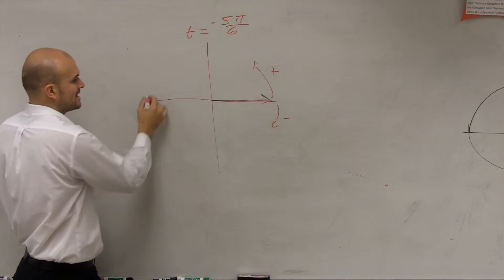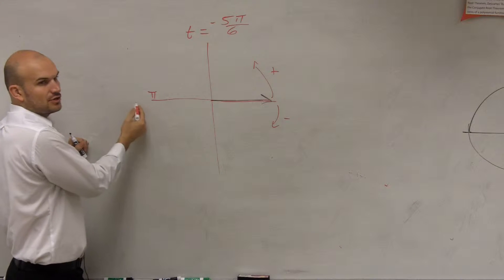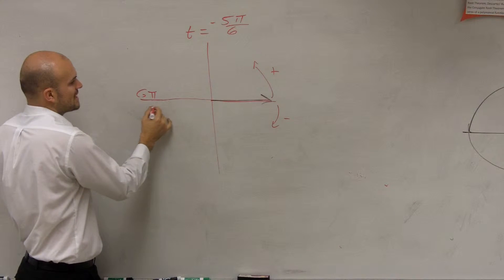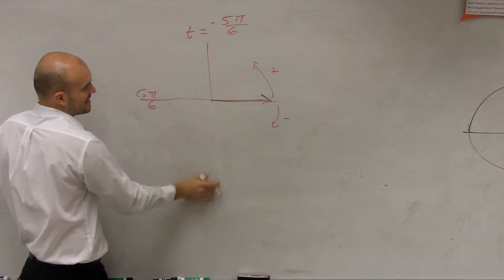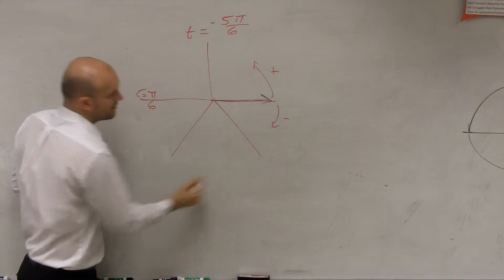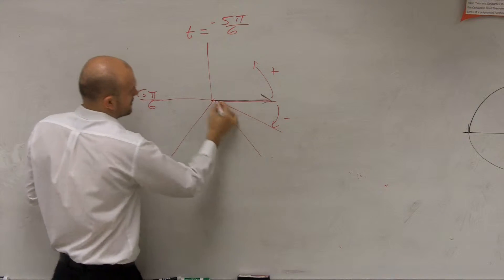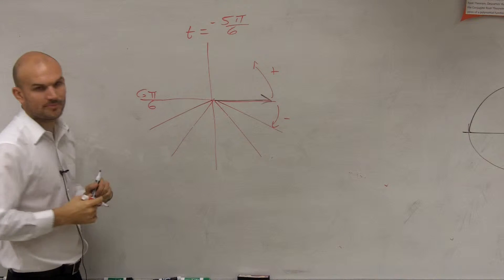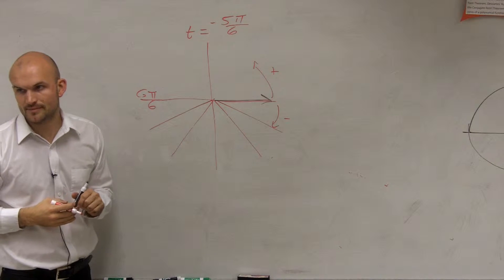However, my denominator is 6. So halfway around a circle is pi. So what I'm going to do is I'm going to break this up into six different sections. That's broken up into thirds. That's now broken up into 6. Everybody follow me?